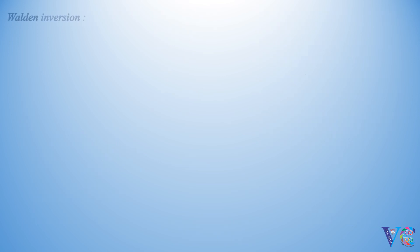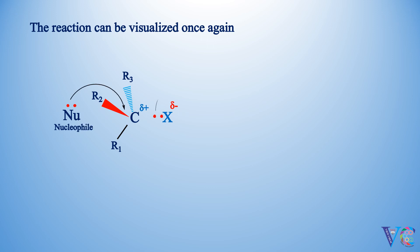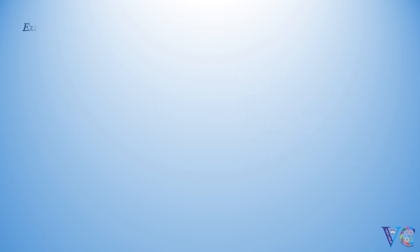Walden inversion. It is a SN2 reaction in which inversion of configuration at the chiral carbon takes place. Inversion of configuration takes place. The reaction can be visualized once again.